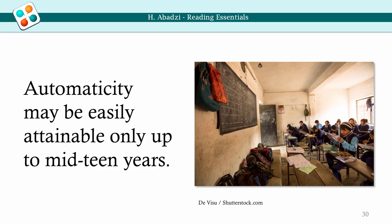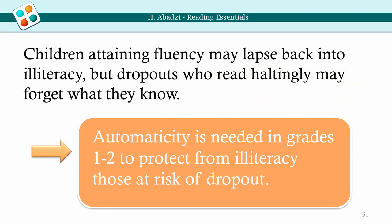Children that attain fluency and continue to read do not normally lapse back into illiteracy. Fluent readers who drop out may maintain or improve reading skills, but halting dropouts may forget what they knew. Eventually, automaticity becomes permanent. Research is needed to understand the prerequisites of permanence. However, current knowledge leads to an instructional goal: children must become fluent readers in grade 1 or grade 2 at the latest.